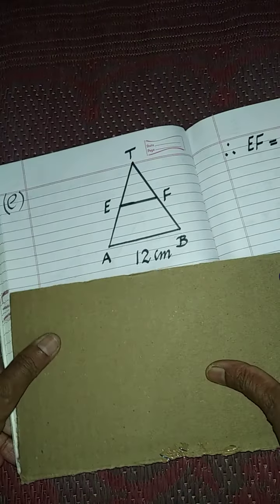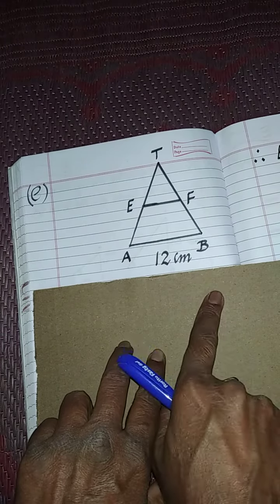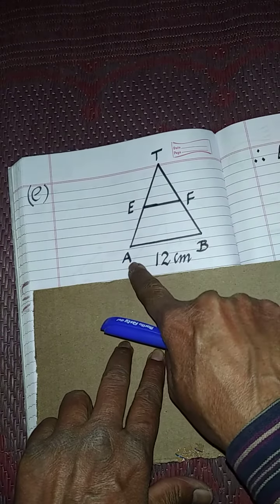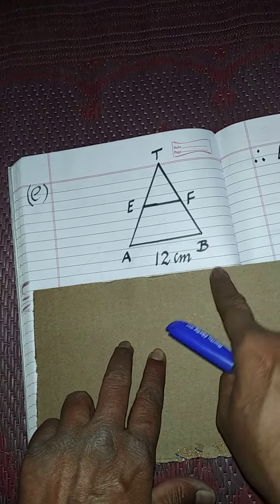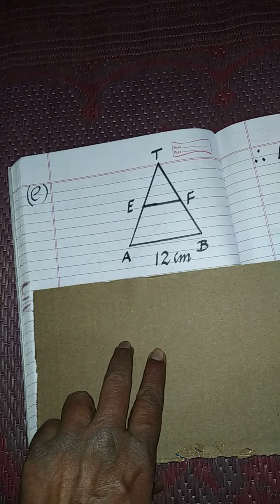Now let us see the front view of that figure. It will be looking like this. So this is a triangle in which E is the midpoint of AT and F is the midpoint of BT, and AB is 12 centimeters.